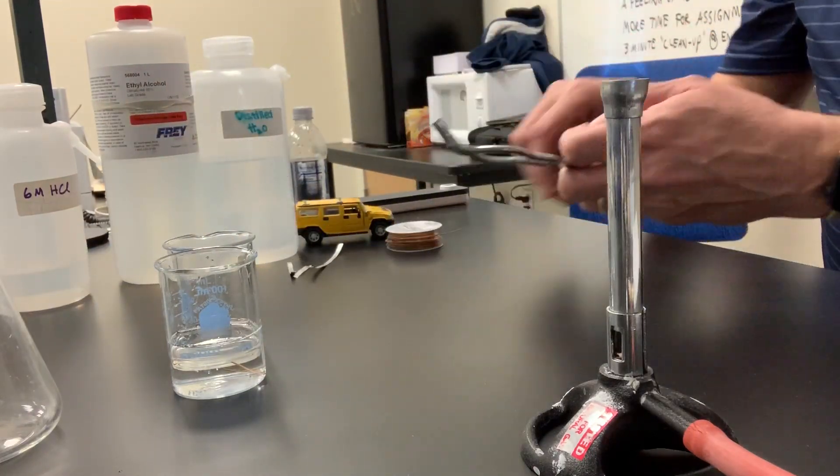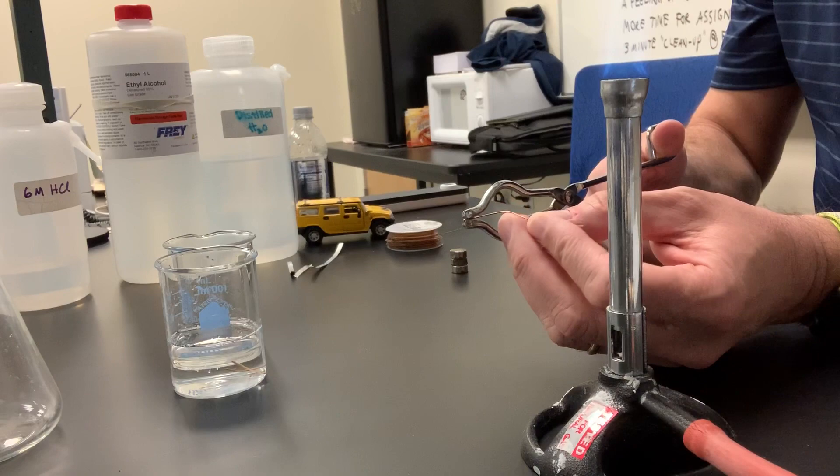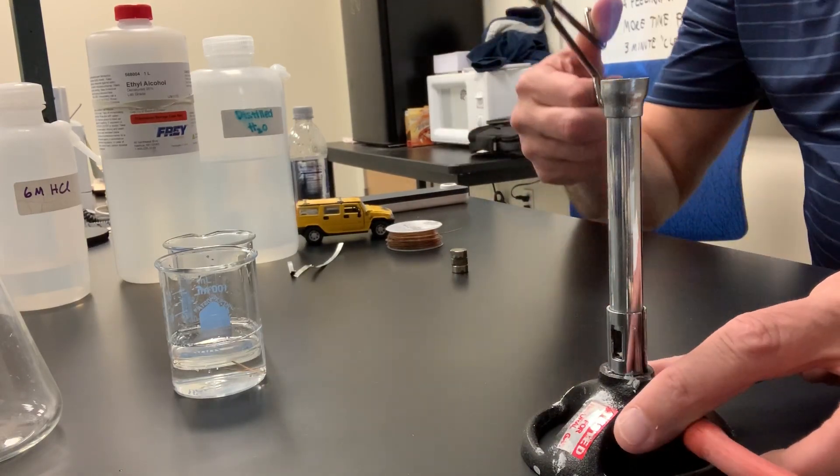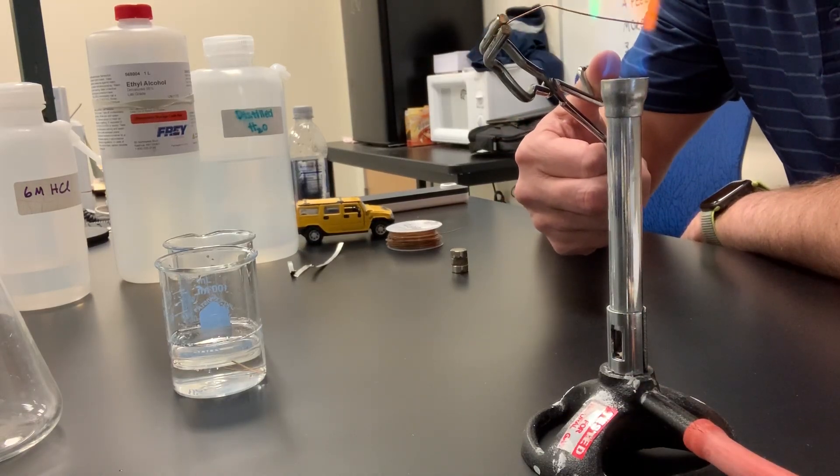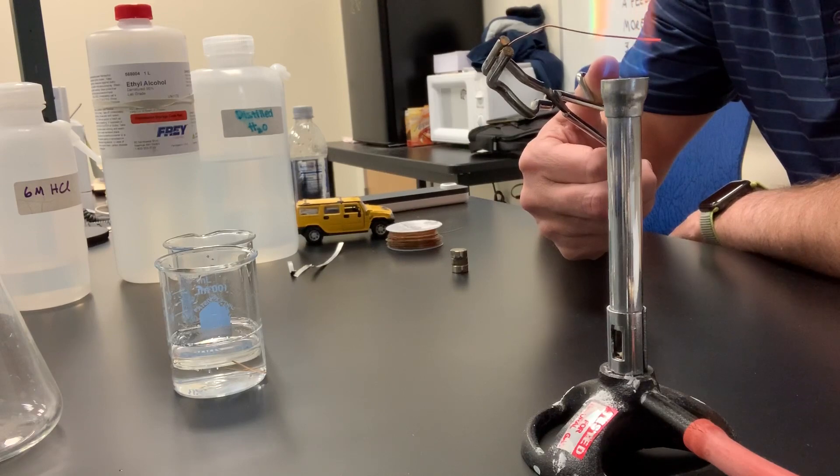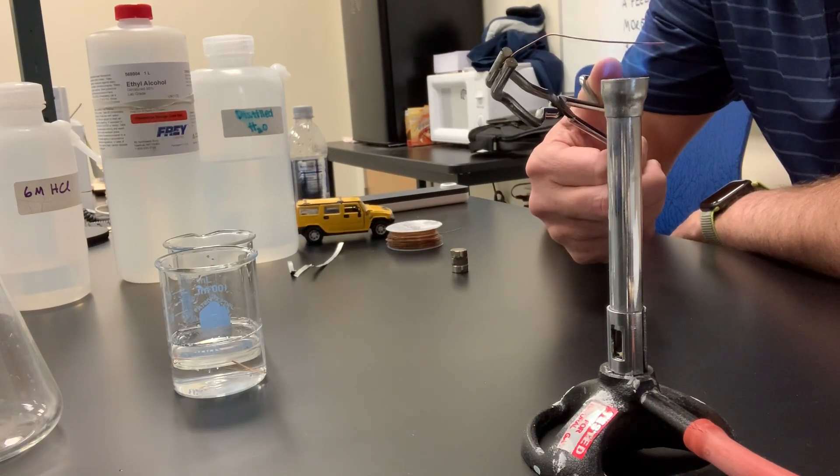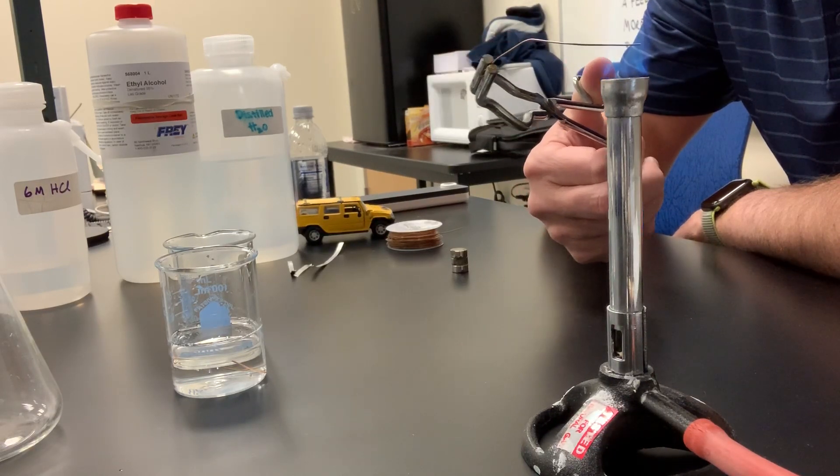So I'm going to use my tongs for this. I'll go ahead and hold on to the piece of copper metal with my tongs, and I'll put it into the flame, and we'll see if copper metal is flammable. Now, we see a characteristic green color associated with copper. We'll talk about that later in the trimester. When I take it out of the flame, I don't see it burning. Do you?